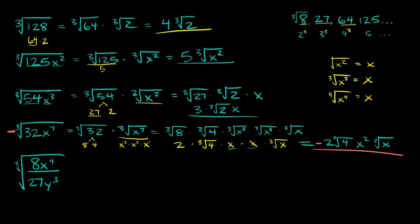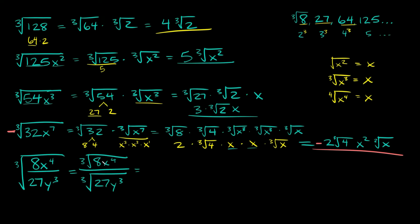Now let's finish with the cube root of 8x to the 4th over 27y cubed. We have a fraction here, so we can break up the radical: the cube root of the top — 8x to the 4th — over the cube root of the bottom — 27y cubed. On top, split into the cube root of 8 times the cube root of x to the 4th. On bottom, the cube root of 27 times the cube root of y cubed.